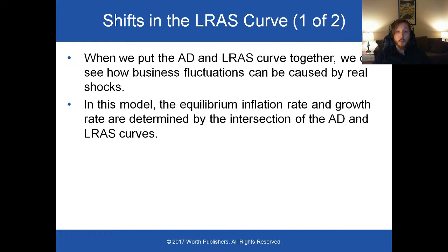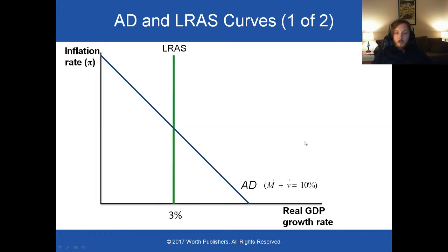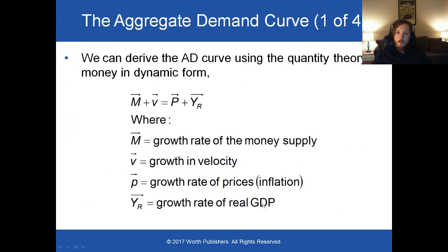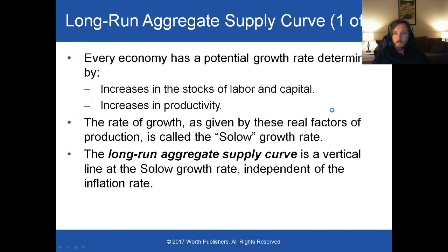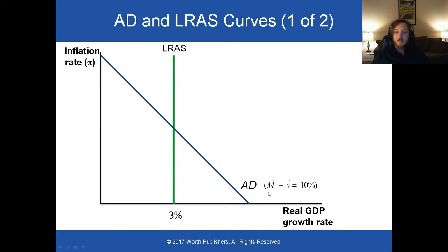We can also put together the aggregate demand and the long-run aggregate supply curves. This allows us to see how real shocks — nuclear war, flooding, drought — can affect inflation. The aggregate demand curve shows us all combinations of inflation and real growth consistent with a specified rate of spending growth. So we have an aggregate demand curve showing 10% spending growth — some combination where the growth rate of M plus the growth rate of V equals 10%, maybe a 10% growth in the money supply and no change in velocity of money.